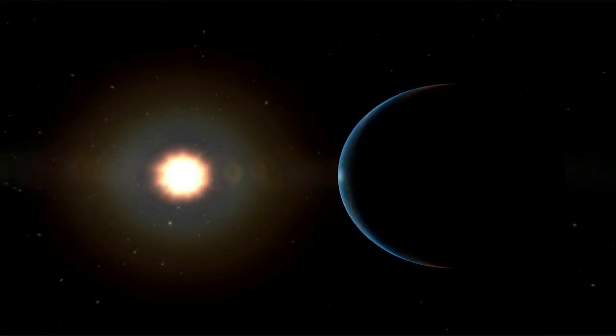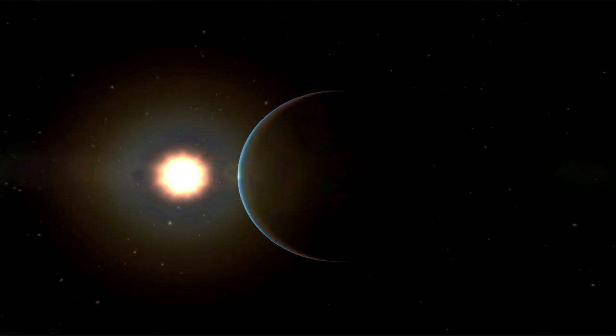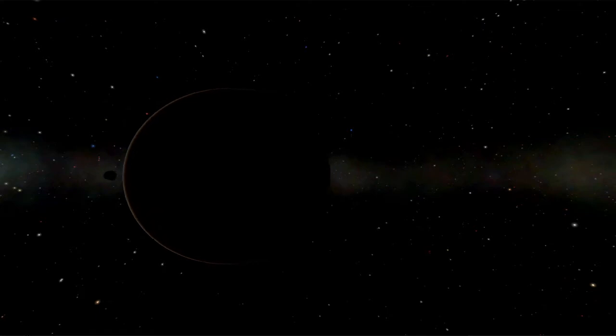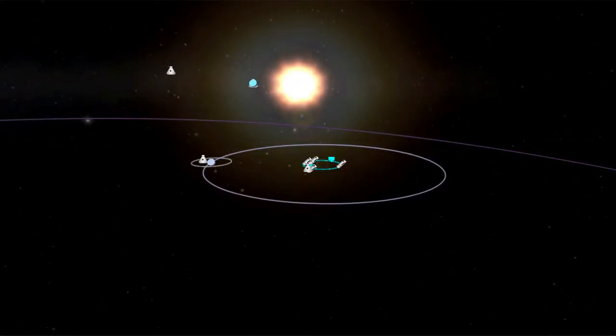In the Kerbal system, things are a bit different. Kerbin's axis has no tilt, so there are no seasons. In fact, Kerbin's equator and the ecliptic are perfectly lined up with the Sun's equator. This also lines up exactly with the orbit of Kerbin's larger moon, Mun.